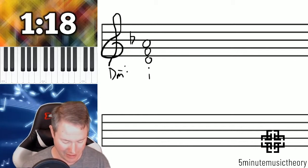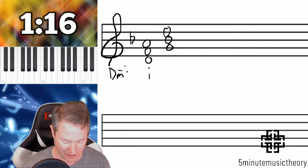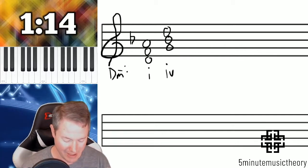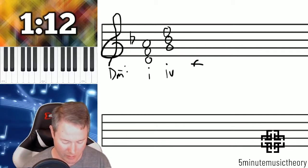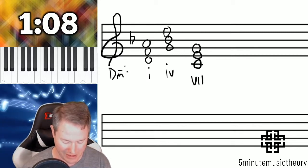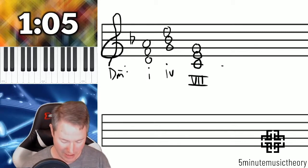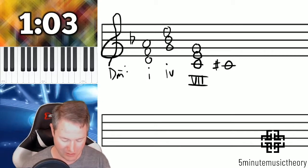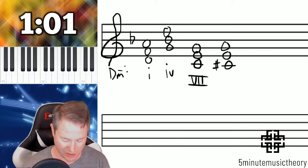If we look at some of the diatonic chords in D minor, here's tonic, and then here's subdominant, for example. Now the subtonic would be built from the natural seventh scale degree, which would here be C natural. This is that subtonic chord.